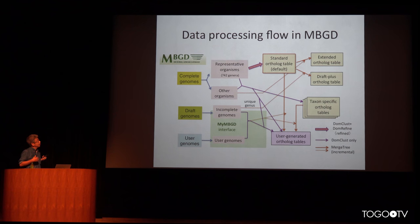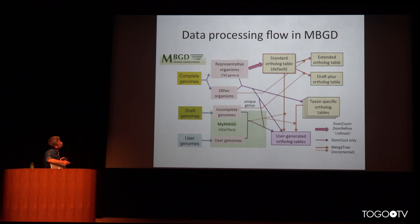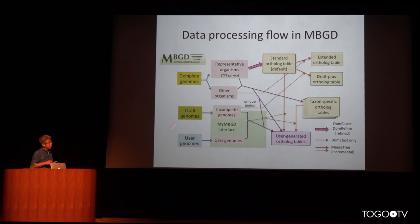The current overall procedure for constructing MBGD is shown here — it is a very complex procedure. The main part is the standard ortholog table, created from representative organisms with one genome from each genus, using DOM-CLAST and DOM-Refine. We also prepare taxonomy-specific ortholog tables. Not only complete genomes, but also draft genome sequences can be incorporated into our database.